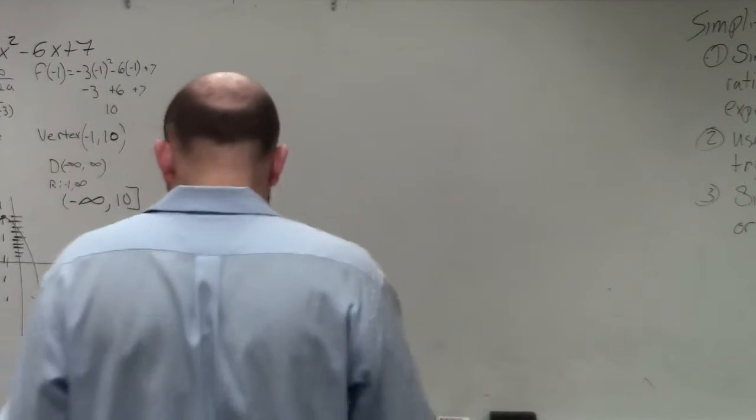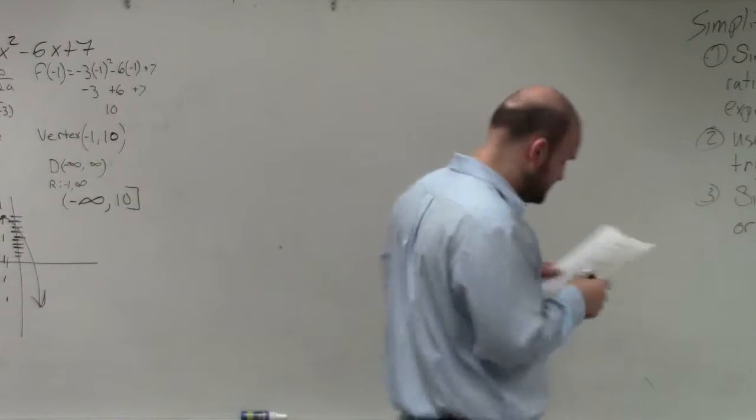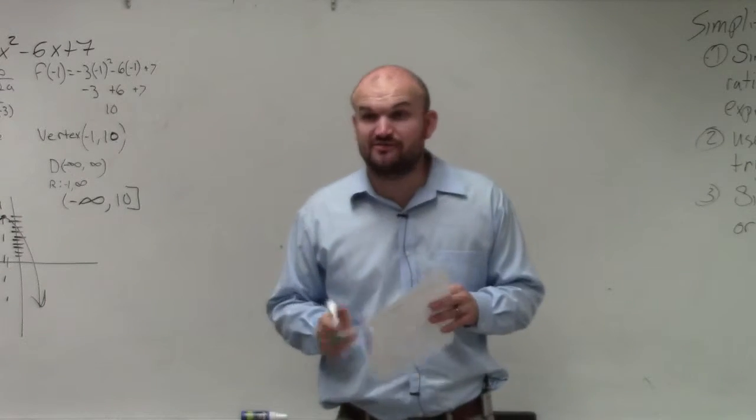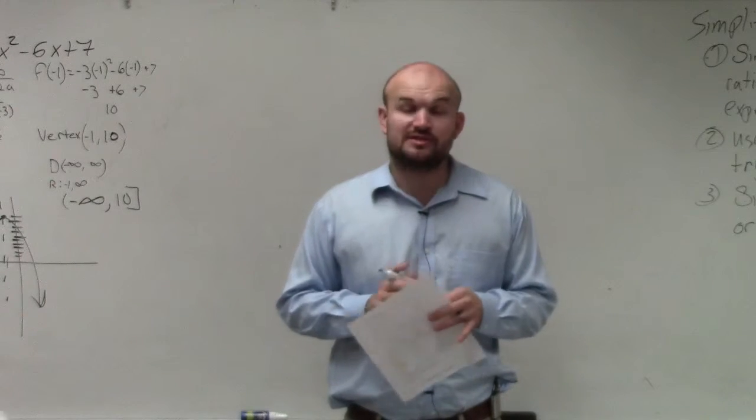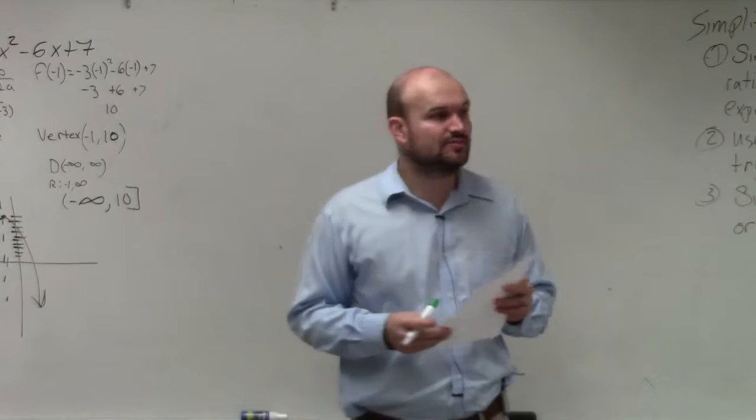So in this problem, it says the velocity of a fallen object can be found using the formula v squared equals 64h. The first thing I would do in this problem is rewrite down the problem.